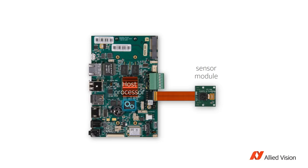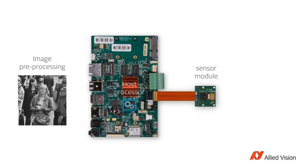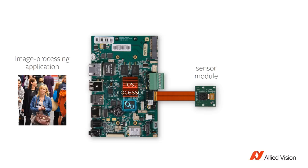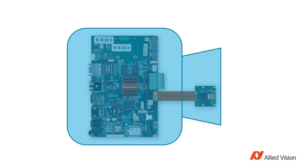Image pre-processing such as noise reduction and color debayering converts the raw image data into an optimized image. Additionally, the actual application-specific processing like facial recognition is completed on the host processor. So technically, the whole system acts as a camera, with the sensor module delivering raw data and the host processor creating usable images out of this data.